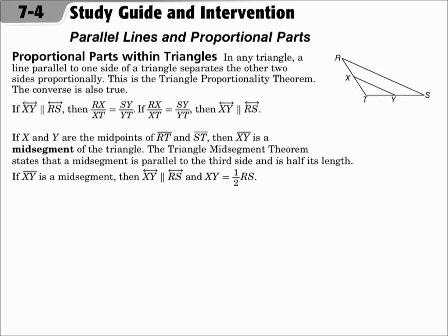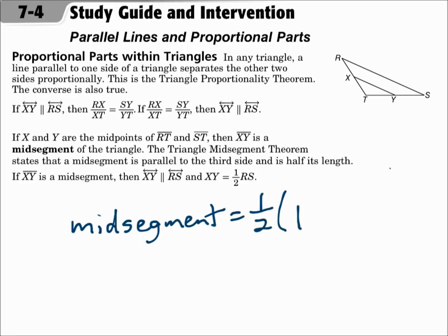If that segment in the middle intersects the midpoints of the two sides, then that segment is a mid-segment. The Triangle Mid-Segment Theorem says that a mid-segment is parallel to the third side, and it's half of its length. So you can make a formula that says the mid-segment equals half of the third side.